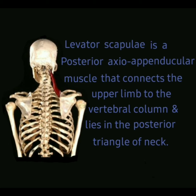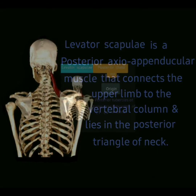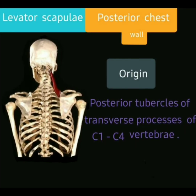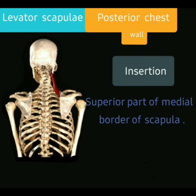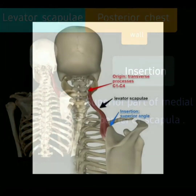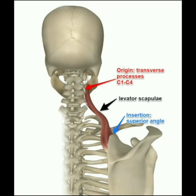Origin: The levator scapulae muscle originates from the posterior tubercles of the transverse processes of cervical 1 to cervical 4 vertebrae. Insertion: The levator scapulae muscle is inserted into the superior part of the medial border of the scapula.